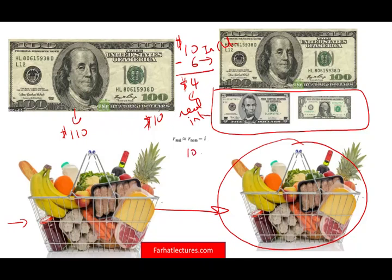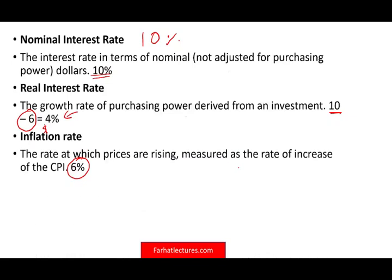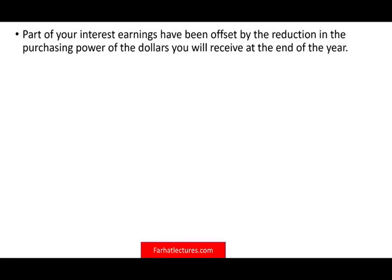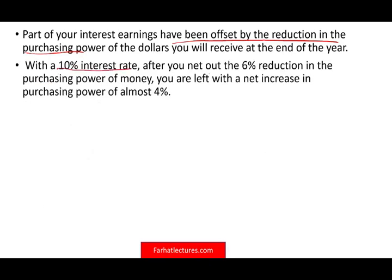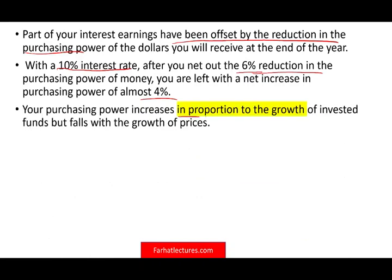If we take the nominal rate minus the inflation, that gives us approximately 4% — a quick and dirty shortcut to find the real rate, but not the precise formula. Part of your interest earning of $10 had been offset by the reduction in the purchasing power of the dollar you receive at the end of the year. After netting out the 6% reduction, what's left is 4%. Your purchasing power increases in proportion to the growth of the invested fund but falls with the growth of prices. When you earn 10% from your bank deposit but the food basket increased by $6, your actual purchasing power gain is calculated differently.